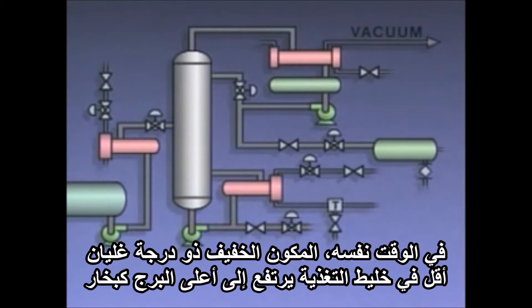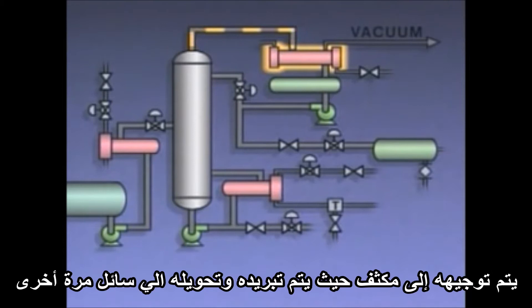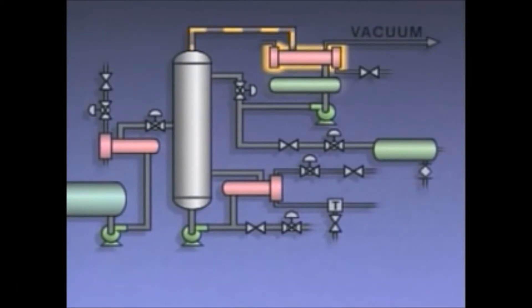Meanwhile, the lighter, lower boiling component of the feed mixture rises to the top of the column as a vapor. It's routed to a condenser where it's cooled and turned back into a liquid. The condensed liquid collects in a tank called a receiver.